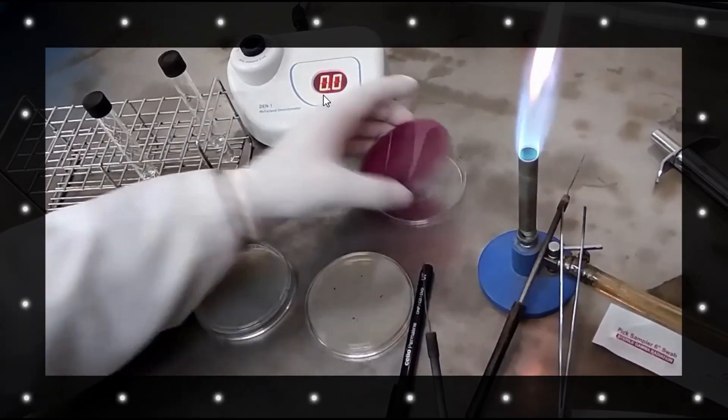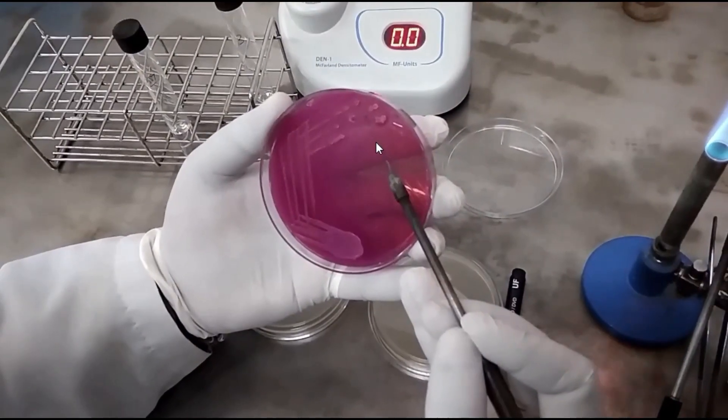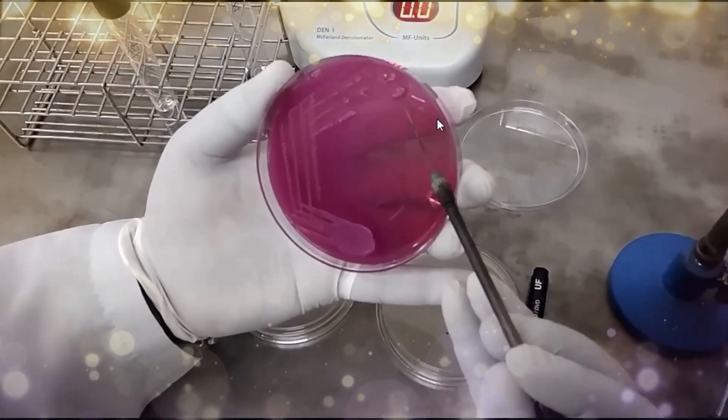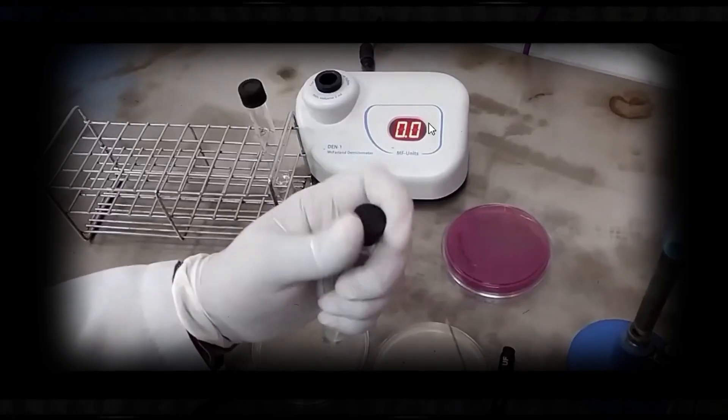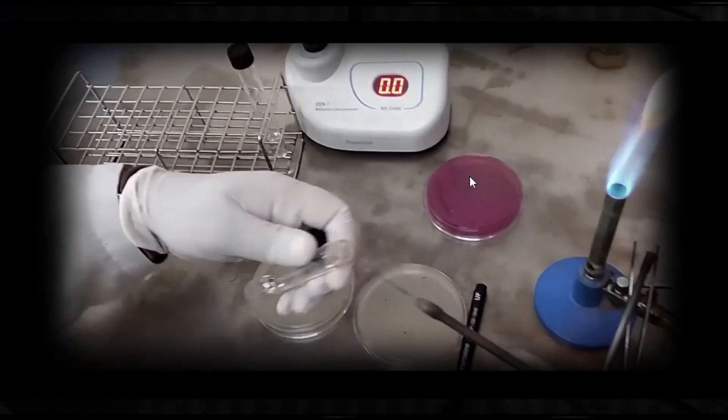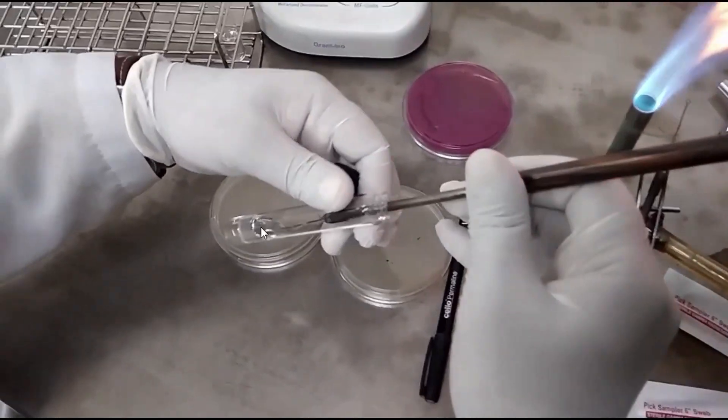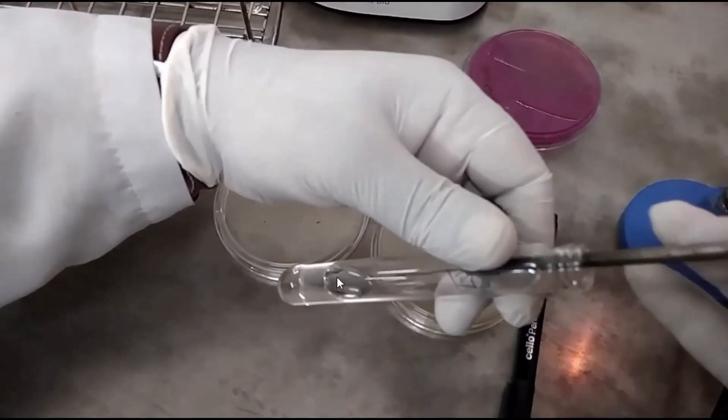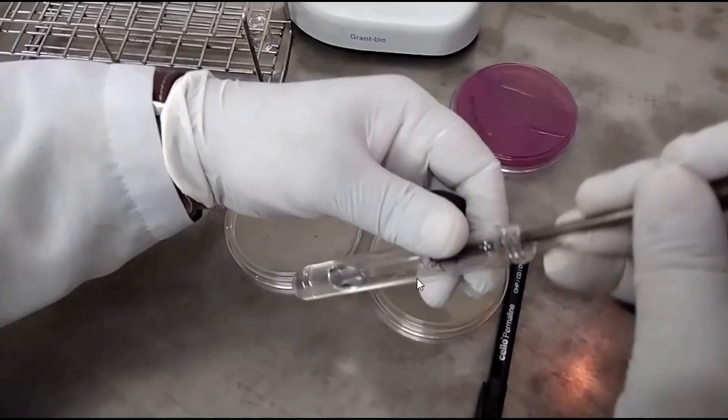Here we have the test organism in MacConkey agar, lactose fermenter colonies. The organism is gram-negative bacilli. Take two to three pure isolated colonies in this normal saline and mix properly in this way.